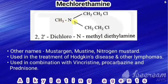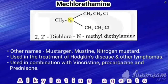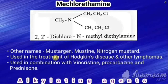The first drug is mechlorethamine. Its structure is CH₃N(CH₂CH₂Cl)₂. The parent is diethylamine, where each ethyl has chlorine on the second carbon — making it 2,2-dichloro — and an N-methyl group, giving the chemical name N-methyl-2,2-dichlorodiethylamine. Other names: Mustargen, Mustin, or nitrogen mustard. Its use is in the treatment of Hodgkin's disease and other lymphomas, usually in combination with vincristine, procarbazine, and prednisone.